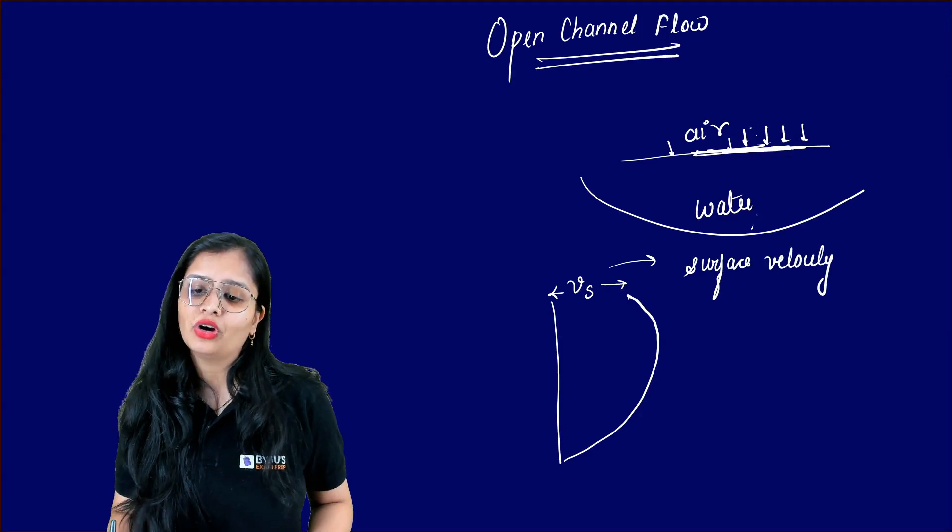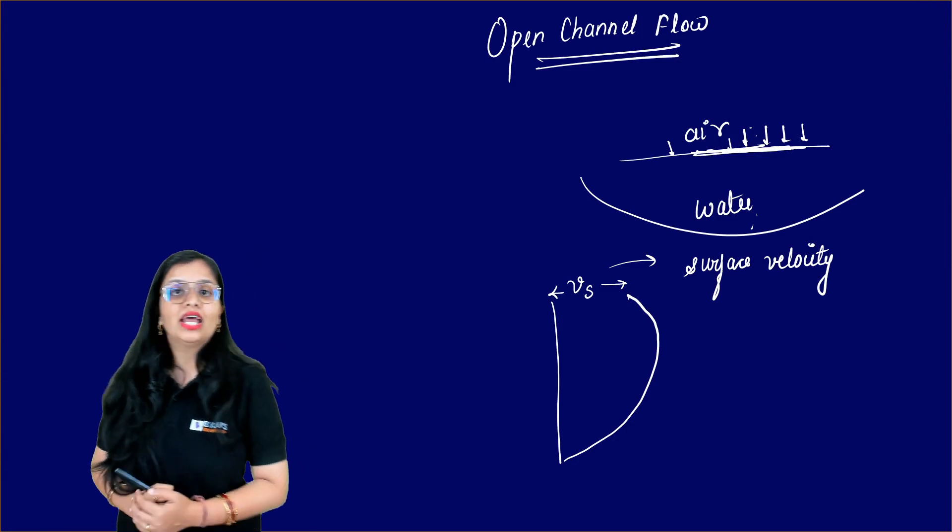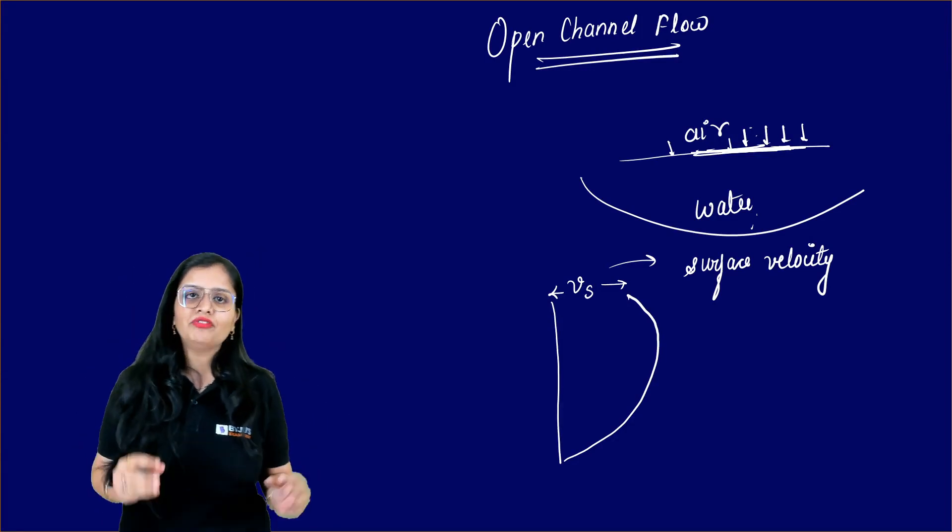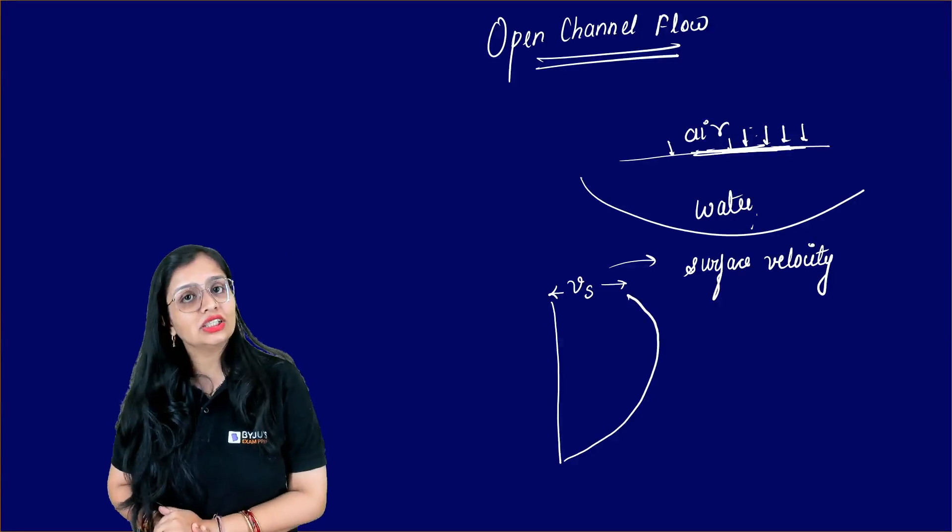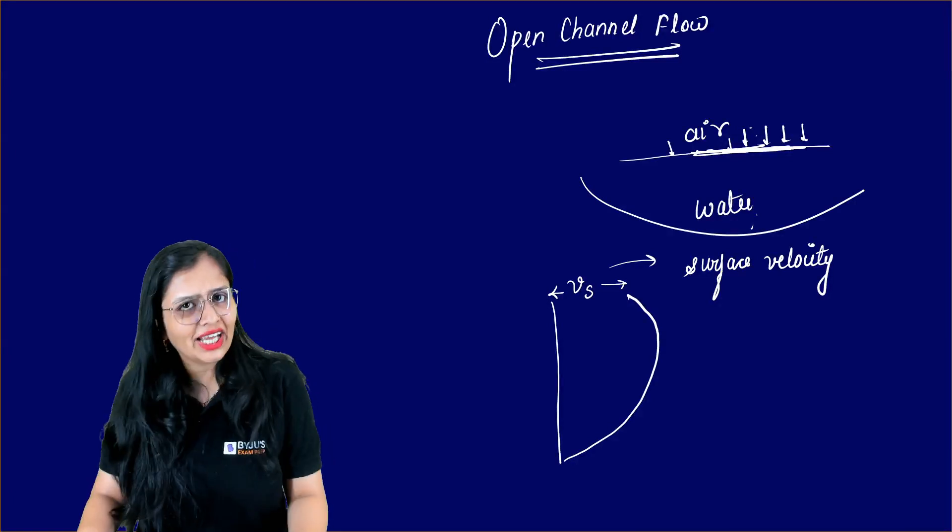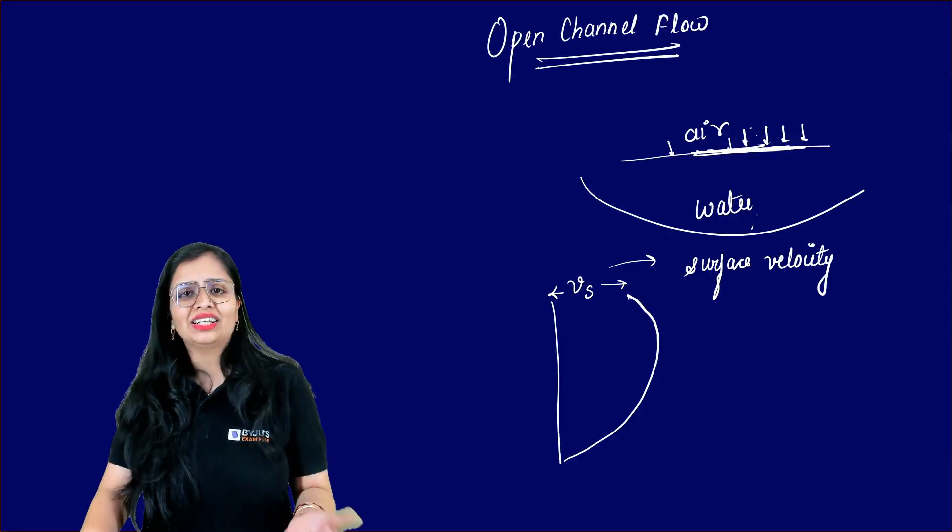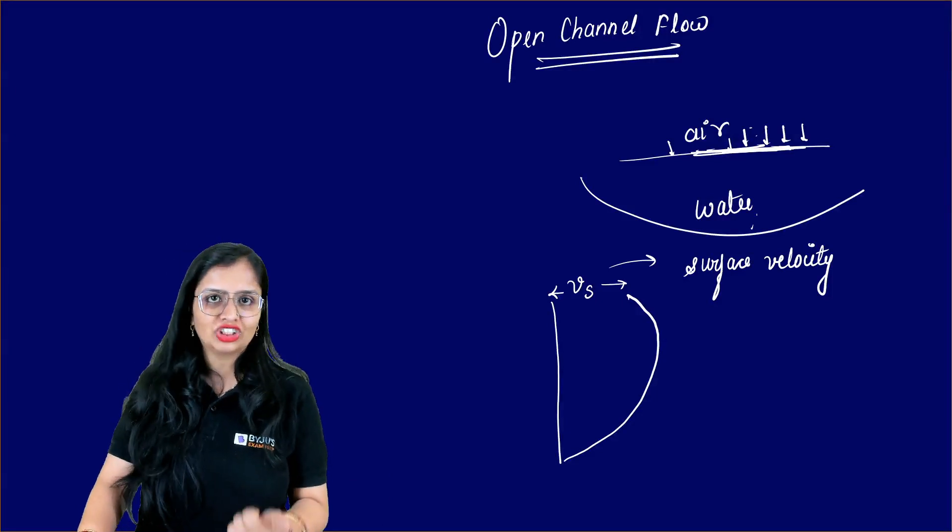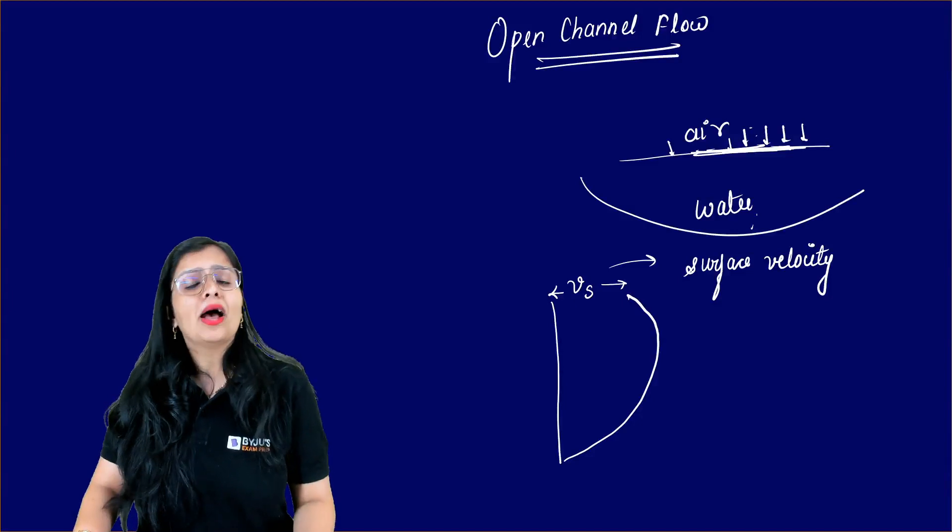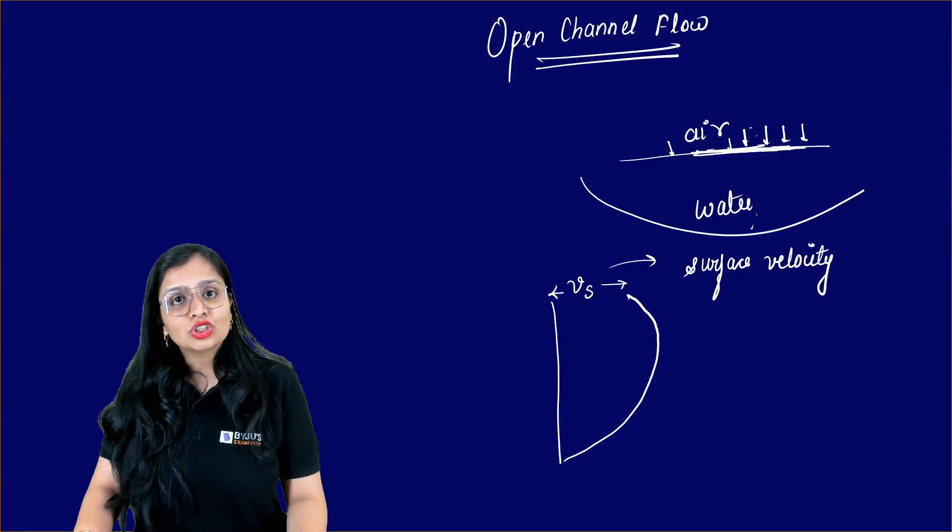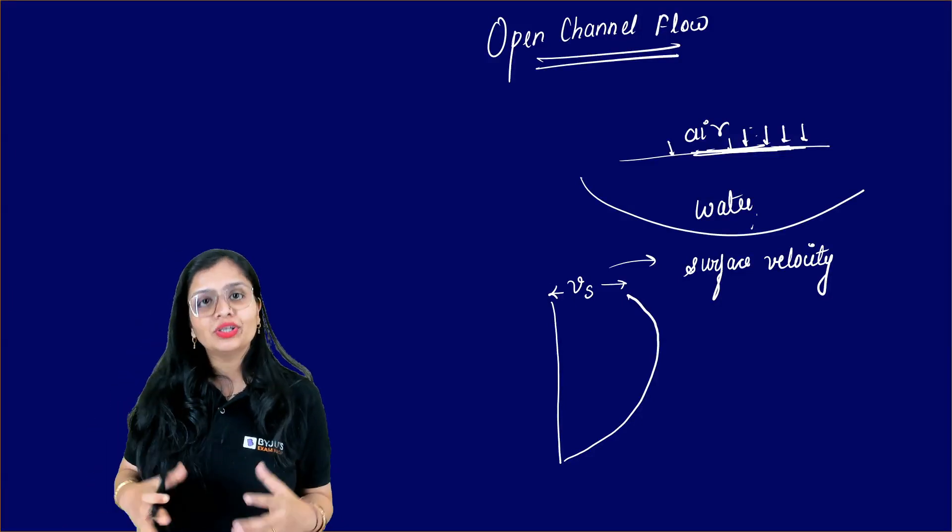So the question comes, why do you call it the surface velocity? The reason is, technically we assume the flow to be one direction, but actually the flow takes place in infinite directions. We have basically told that it takes place in three directions: longitudinal direction, lateral direction, and normal direction.